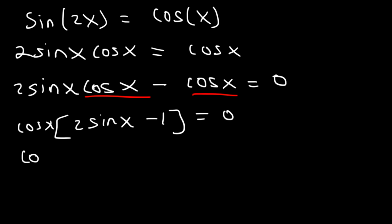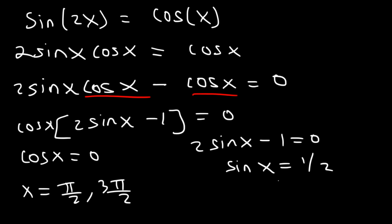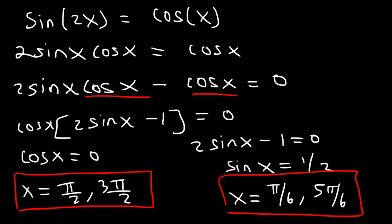Set cosine x equal to 0, and 2 sine x minus 1 equal to 0. Adding 1 then dividing by 2 gives sine x equals 1 half. Cosine x equals 0 when x is pi over 2 or 3 pi over 2. Sine x equals 1 half when x is pi over 6 and 5 pi over 6. So these are the four answers within the range 0 to 2 pi.